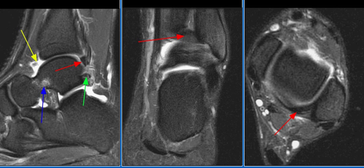A 27-year-old female dancer with a history of left ankle pain underwent MRI examination of the left ankle. The transverse ligament is hypertrophied, forming a posterior labrum, as seen on this image with the red arrow. There is moderate fraying of the posterior talofibular ligament.